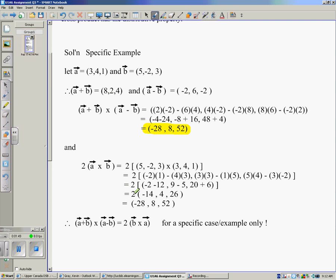And don't forget the factor of 2, that scalar multiple of 2, then gives us the example negative 28, 8 and 52. And that's exactly the same that we have at the top.